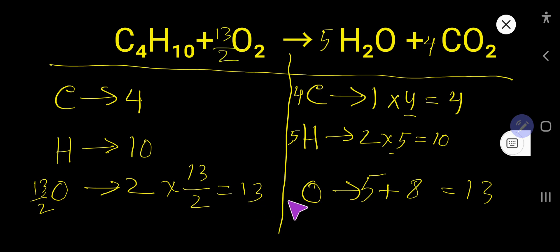Now here 13 oxygen, 13 oxygen, 10 hydrogen, everything is balanced. But this is a fraction. To change this fraction to whole number, you need to multiply this whole equation by 2.